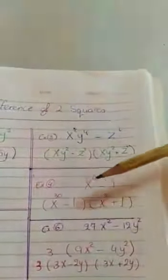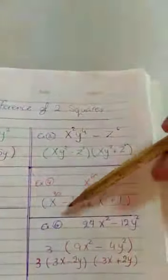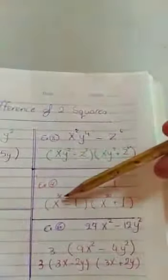In number 4, x to the power of 60 minus 1. Also, I'm going to make two brackets. Divide the power, so x to the power of 30, root 1 is 1, minus 1 in one factor, and x to the power of 30 plus 1 is the other factor.